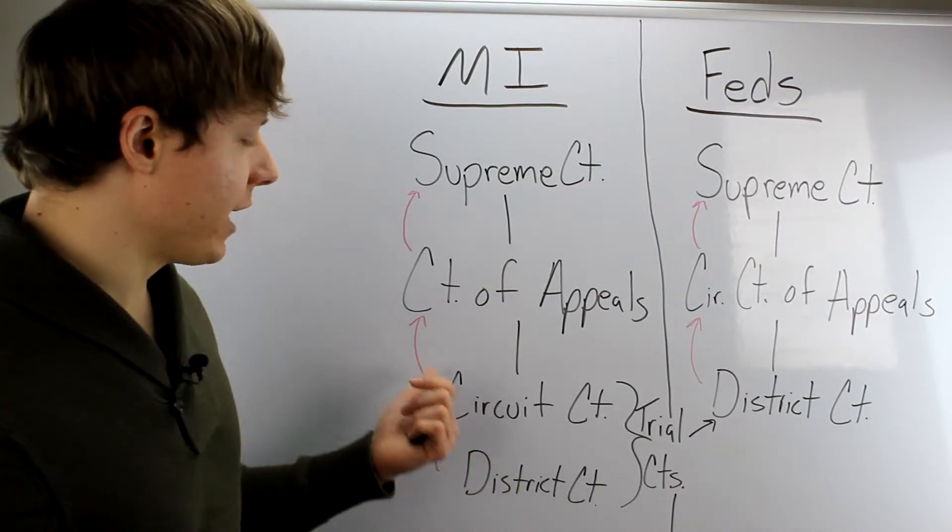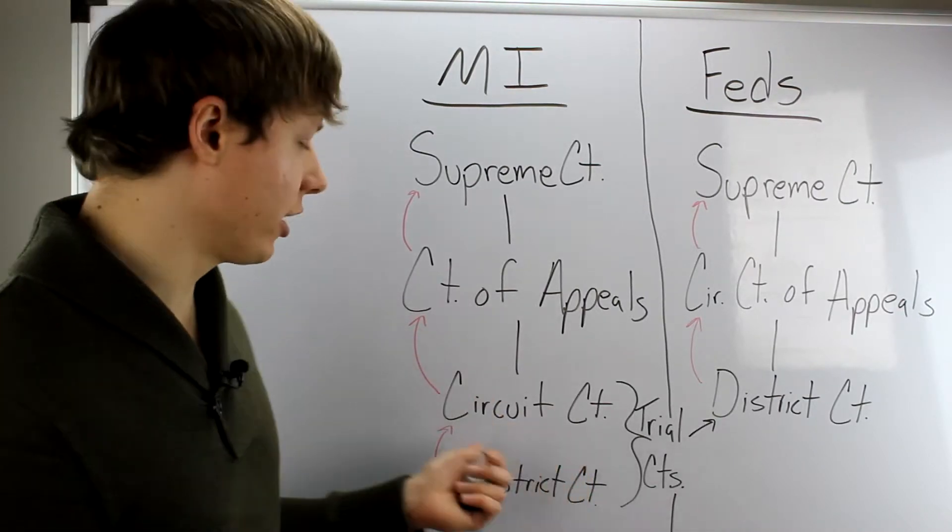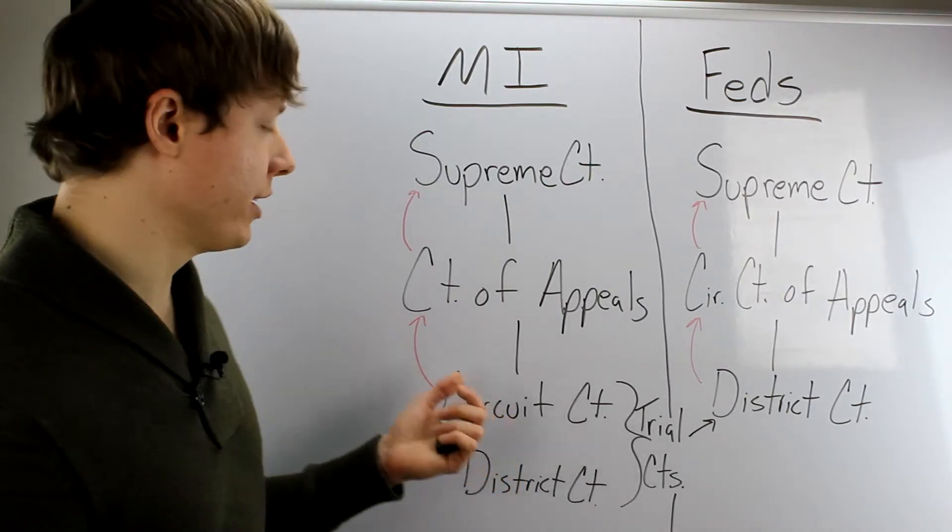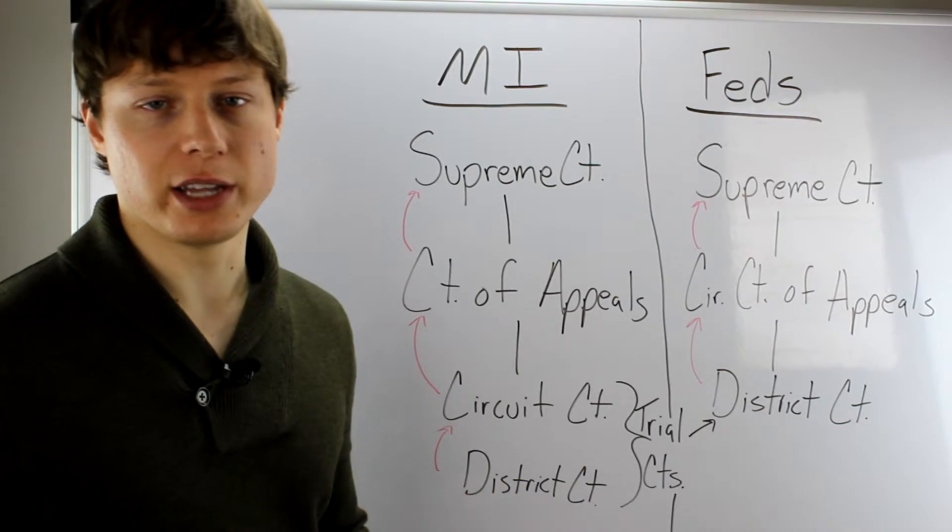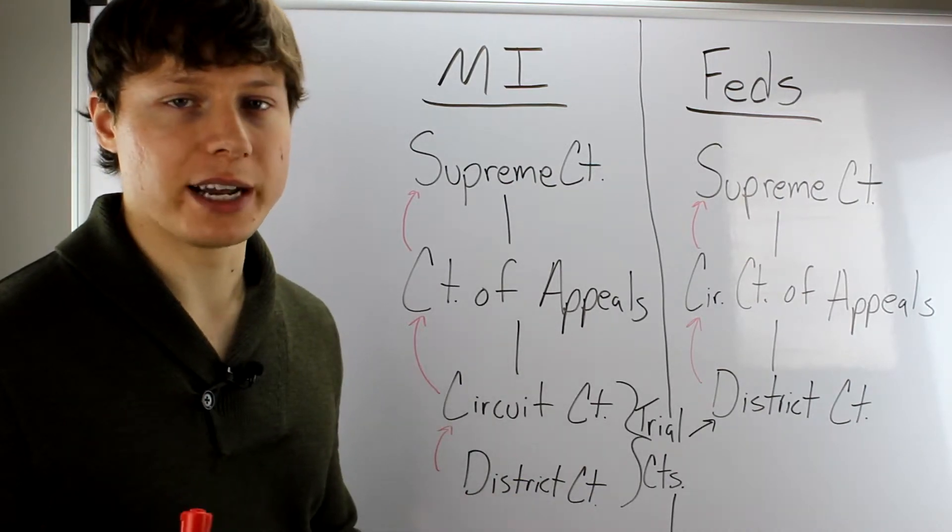So let's imagine that your trial or your court case started off in circuit court and you lost. So you want to appeal it. You go up to the court of appeals. You lose there and you want to appeal it again. Now instead of doing an appeal by right, you have to do an appeal by leave.